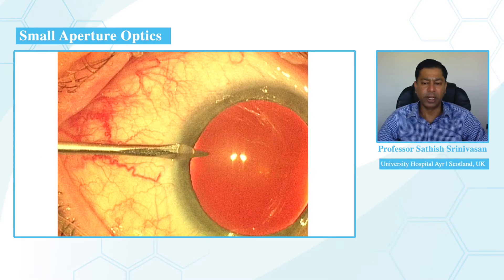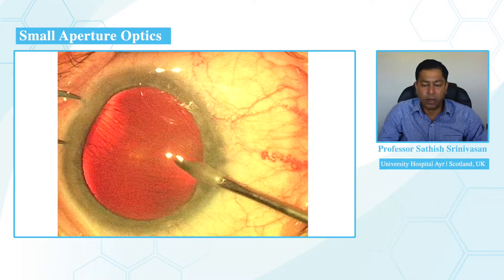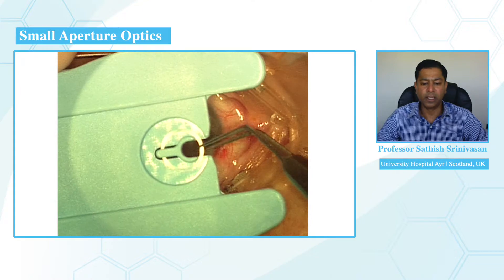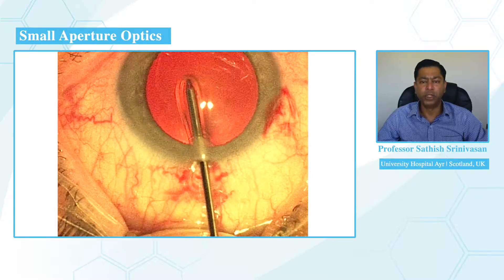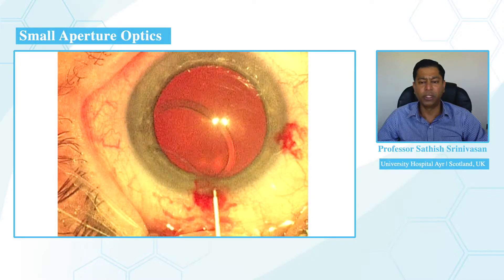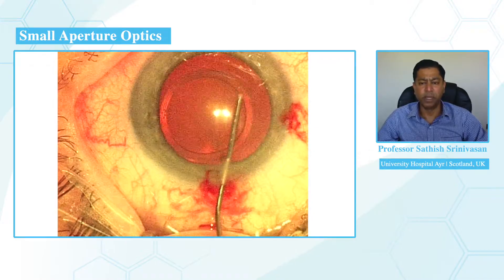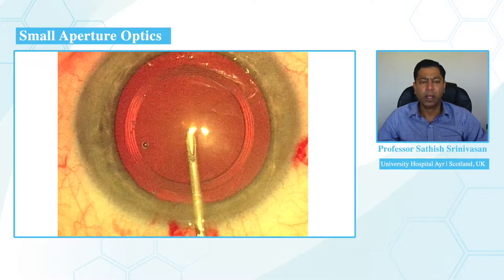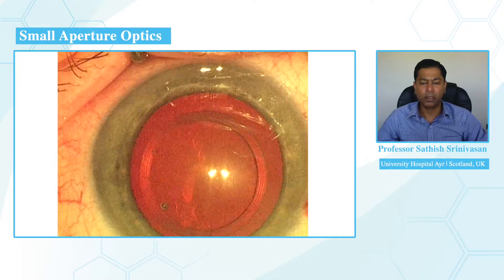This video illustrates implantation of the IC8 intraocular lens. The surgical procedure is no different from standard lens-based surgery, whether cataract surgery or refractive lens exchange. I'm using a device — a disposable silicone ring — which helps center the capsulorhexis based on the first Purkinje image from the operating microscope. This silicone ring is placed on the anterior lens surface and measures between 5.5 and 6 millimeters; in this example a 5.5 millimeter ring is used.